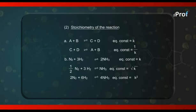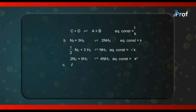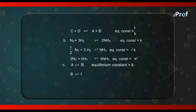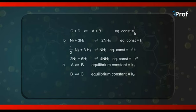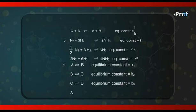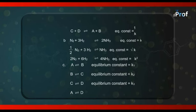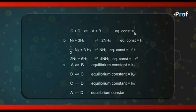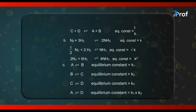One more thing regarding stoichiometry: suppose we have a sequence of reactions — A changing into B with equilibrium constant K₁; B changing into C with equilibrium constant K₂; and C changing into D with equilibrium constant K₃ — all at the same temperature. I want to know the equilibrium constant for the comprehensive reaction A changing into D. This equation can be obtained by summing up all three reactions, so the total equilibrium constant is the product of the individual ones: K₁ × K₂ × K₃.